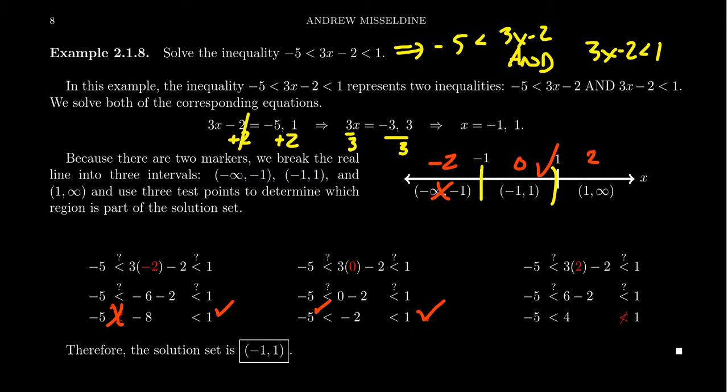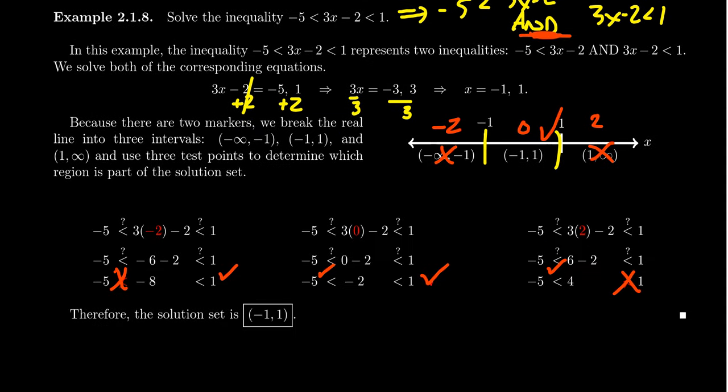For x equals 2: 3 times 2 is 6, minus 2 is 4. Four is greater than negative 5 — that works — but 4 is not less than 1, so it fails. In an and statement, both have to be true. Like saying let's go to the movies and get ice cream: if you do one but not the other, you've broken your promise. Both things have to work. So the solution is the interval negative 1 to 1 — that was the only interval that passed the test.